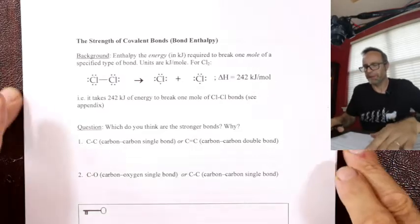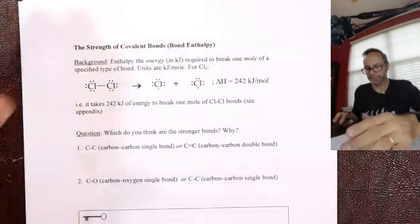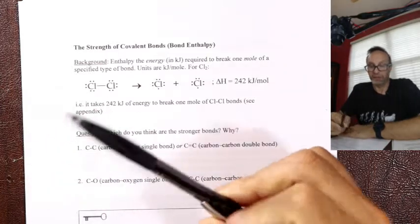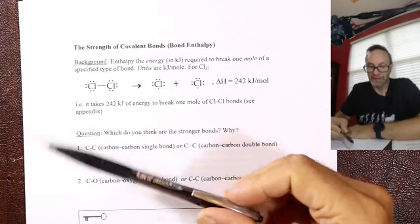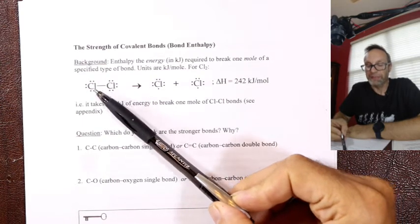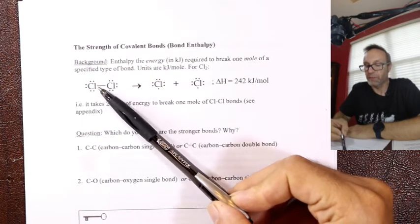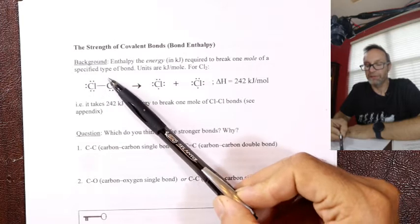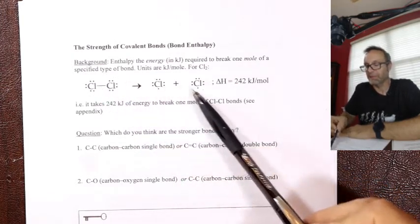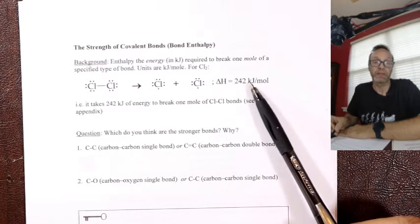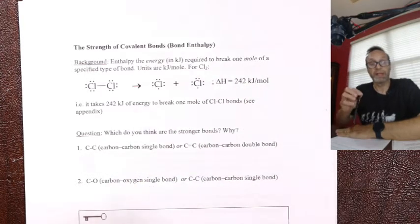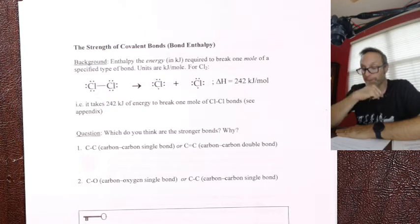What makes a strong bond? What makes a weak bond? As we saw in the thermodynamics packet and the appendix to that packet, bond enthalpy. An average Cl-Cl bond - if I take a mole of Cl₂ molecules and break that mole of bonds to get atoms, that costs 242 kilojoules per mole. So that's called bond enthalpy, measured in kilojoules per mole.